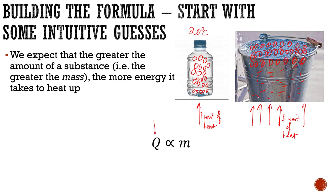We expect things with different mass to require different amounts of heat to get to a certain temperature. Mathematically, we write this as Q is proportional to M, where Q is heat measured in joules and M is mass measured in kg. This proportional symbol means that if I double my mass, the amount of heat required would also double. We're making an assumption that heat is proportional to mass — this is not a rigorous derivation, just to motivate it.